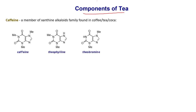Tea is a complex solution. We have caffeine as an active ingredient, but it also contains other alkaloids — theophylline and theobromine. These have very similar structures to caffeine; all three belong to the xanthine alkaloids family. We call them alkaloids because they contain nitrogen molecules and are basic.